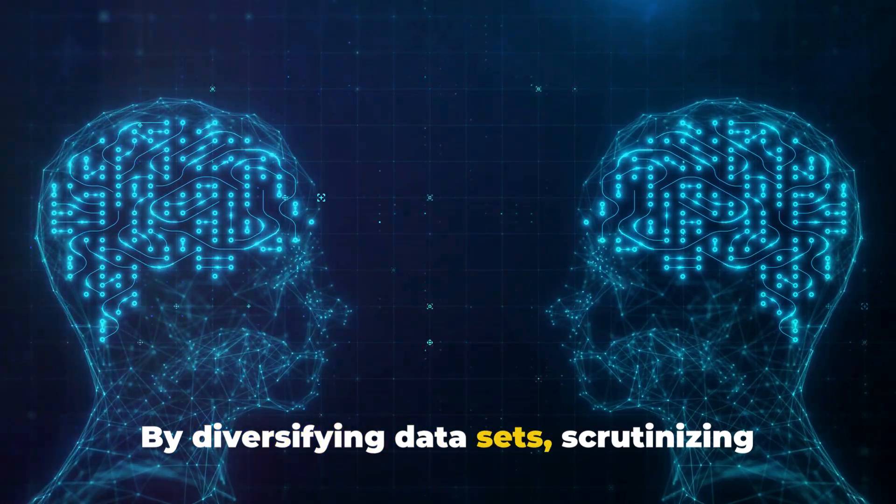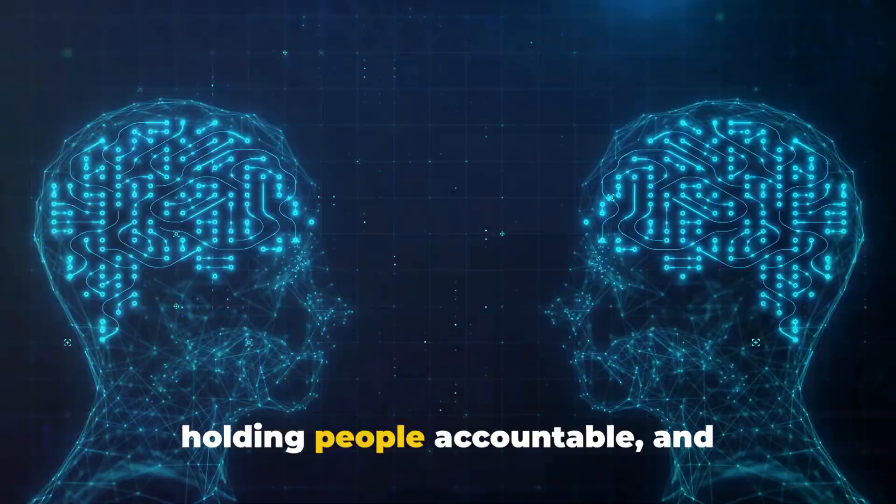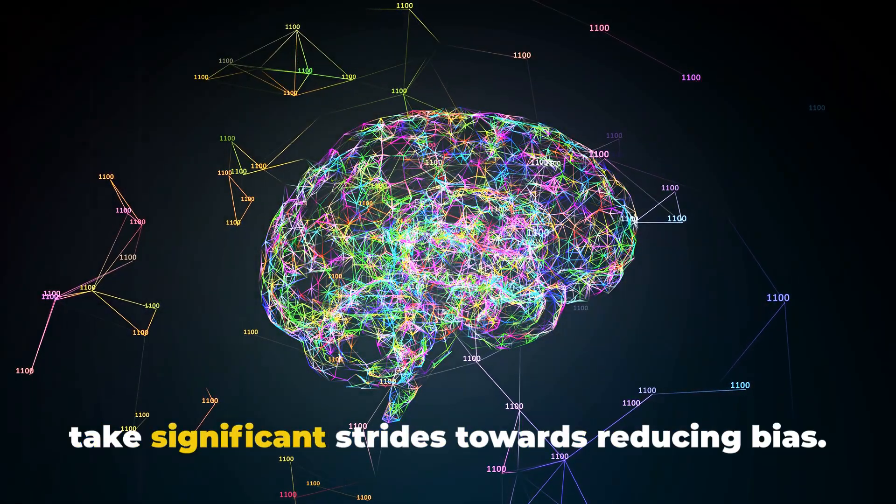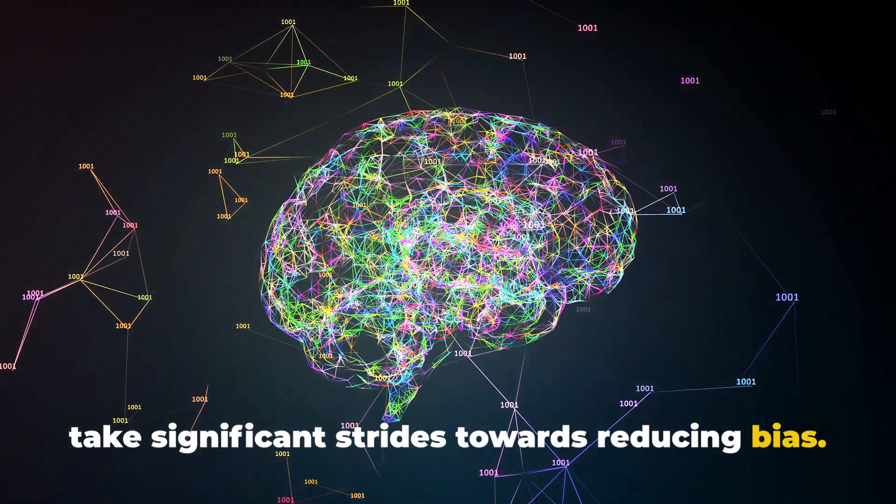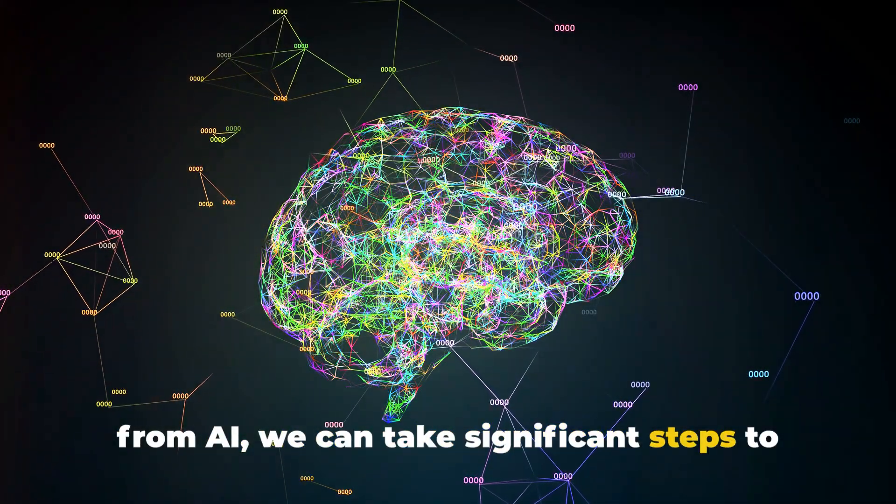By diversifying datasets, scrutinizing algorithms, increasing transparency, holding people accountable, and implementing strict regulations, we can take significant strides towards reducing bias. While we can't completely eliminate bias from AI, we can take significant steps to reduce it.